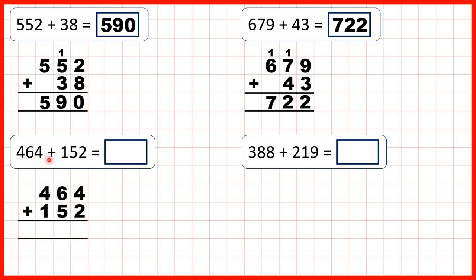Now, 464 plus 152. We start with our ones column, 4 plus 2 is 6. We don't need to write anything above, because 6 is a single digit number. So we can move on to the tens. We have 6 plus 5, and that's 11, so we write 11 as 1, 1, because it's a two-digit number — first digit above the next column along. Finally, we move on to our hundreds column, and 1 plus 4 plus 1 is 6, so our answer is 616.